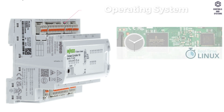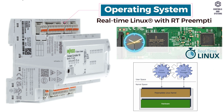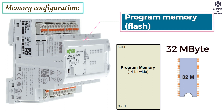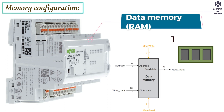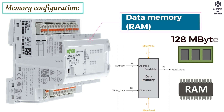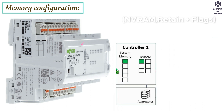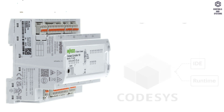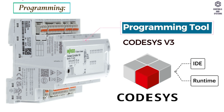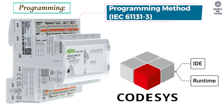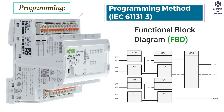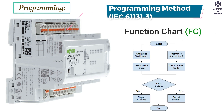Software data: Operating system is real-time Linux with RT preemption patch. Program memory (flash) is 32 MB. Data memory (RAM) is 128 MB. Non-volatile memory is 128 KB. Programming tool is CODESYS version 3. Programming methods are: ladder diagram, functional block diagram, structured text, and function chart.